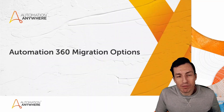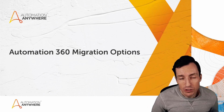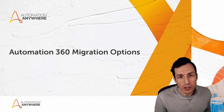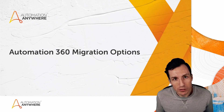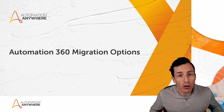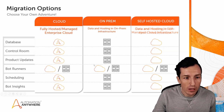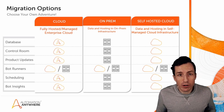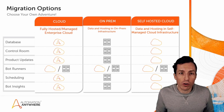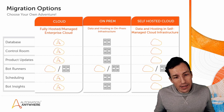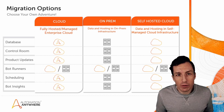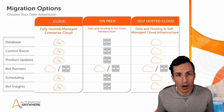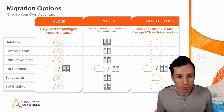When it comes time to migrate from version 10 or version 11 to Automation 360, developers are faced with a couple of different options. In this video I want to talk about your different migration options and what that means for your final implementation and also what that means for your migration process. I want to talk about what I would consider the three primary options for doing your migration.